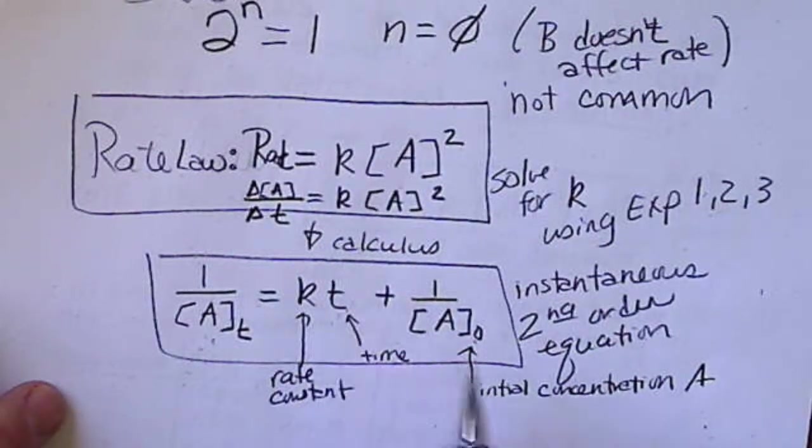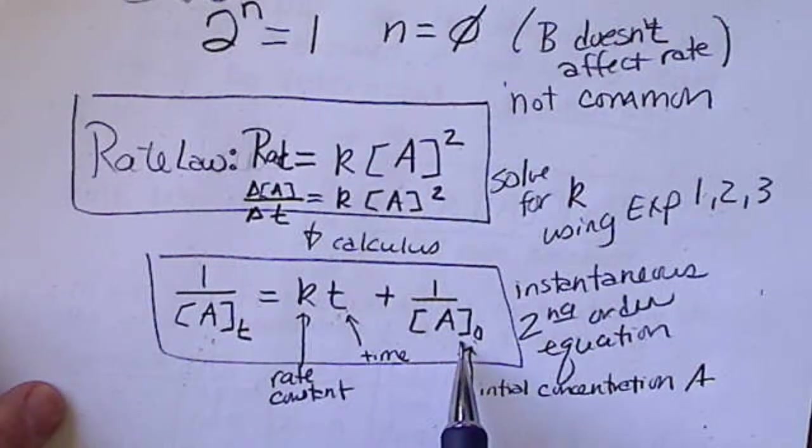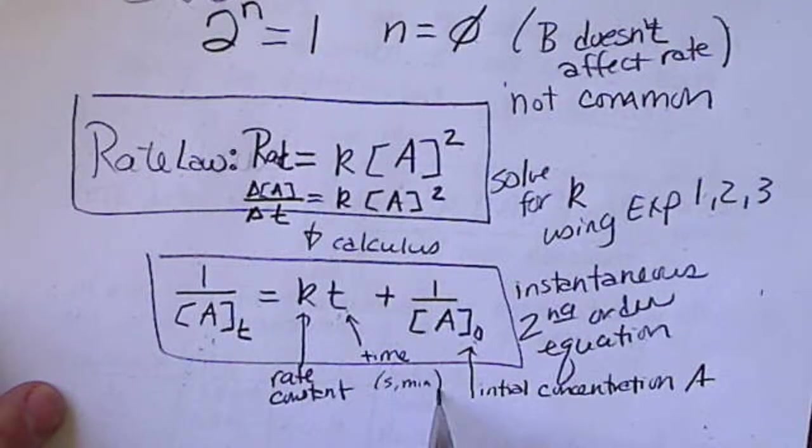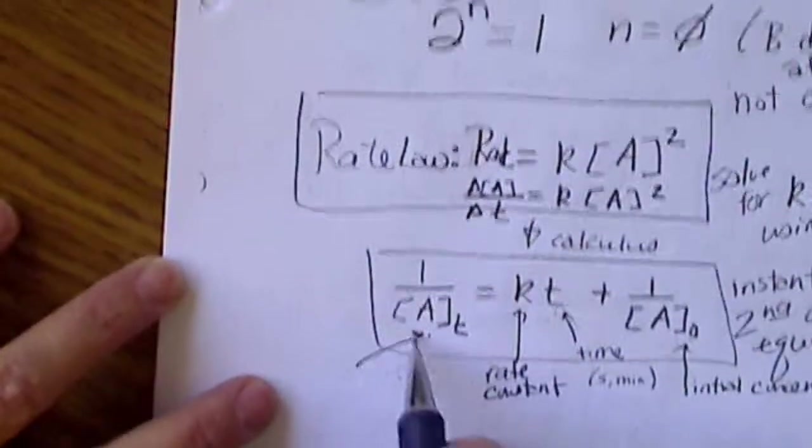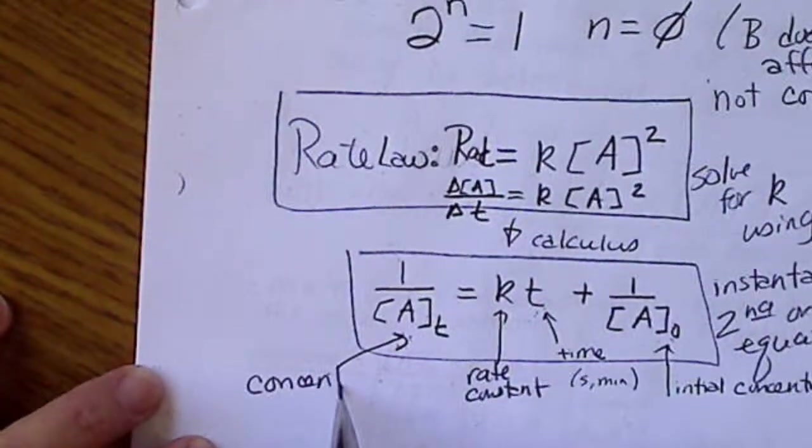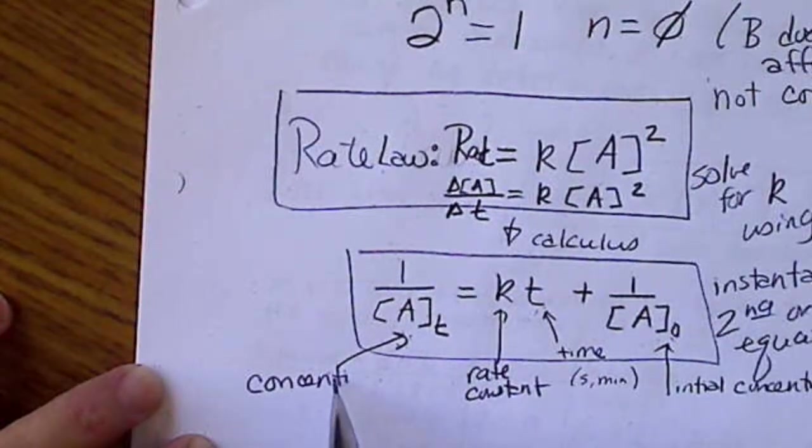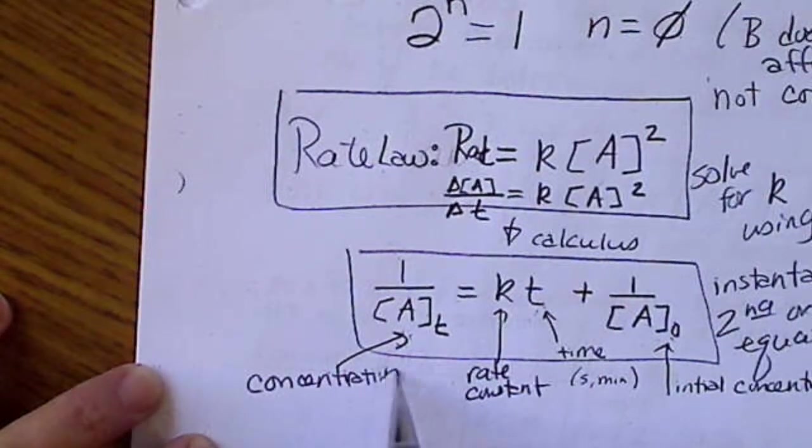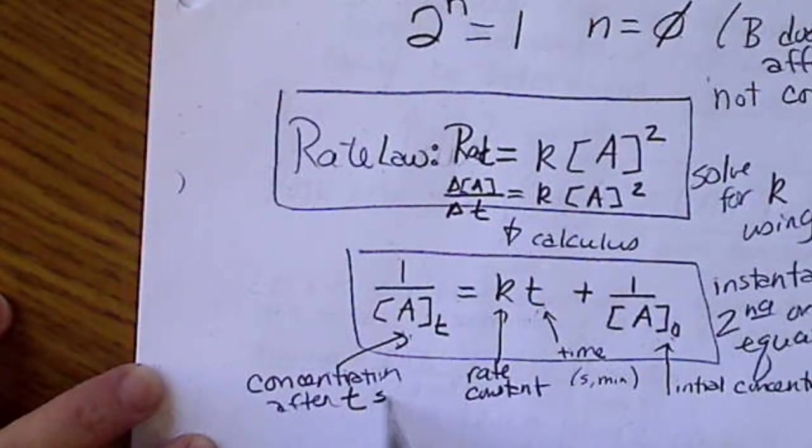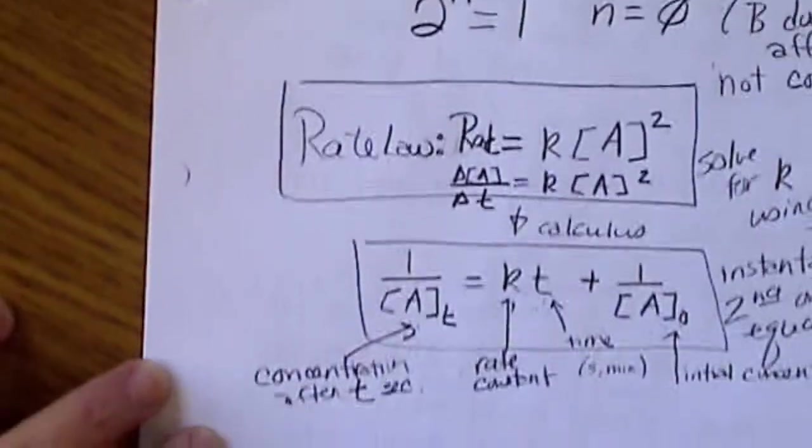T times 0 gives us the initial concentration. Our time might be in seconds or minutes. And then this is the concentration after a certain time T. And I'll just use seconds as our common time unit.